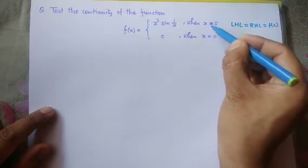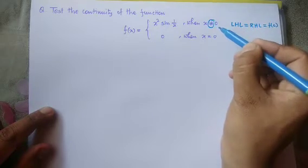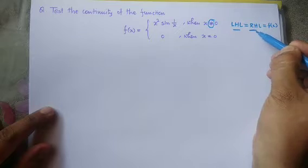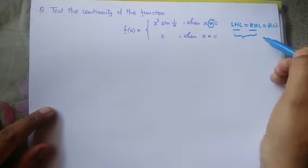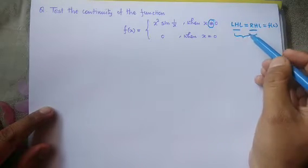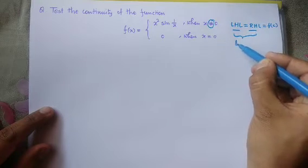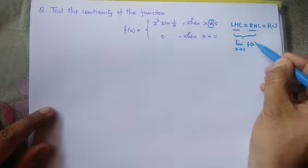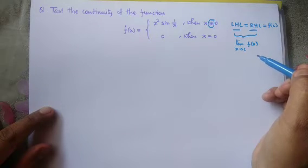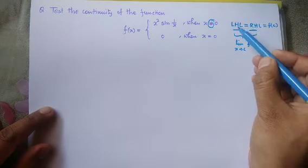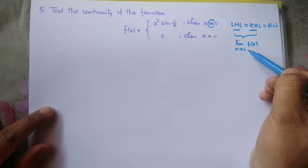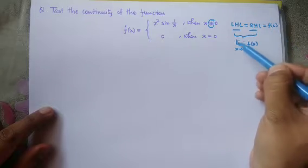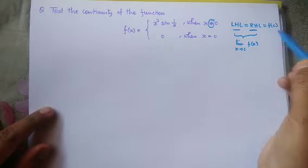Whenever you have the case where these are not equal, the function is not continuous. We know that we need to find the left hand limit or the right hand limit. As I said earlier, if you combine them, limit x tends to c of f(x). So basically I am going to find both the limit and the functional value.